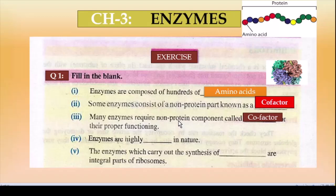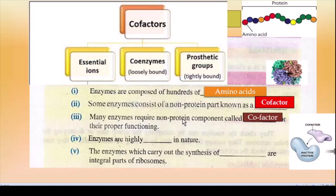Cofactor aur prosthetic group mein kaafi logon ko confusion hota hai. Ek enzyme ke saath jo non-protein part attach hota hai, that is a cofactor. Cofactor ke aage teen types hain: metal ions, coenzymes, aur prosthetic group. Prosthetic group tightly bound hota hai; loosely bound ho toh coenzyme. Agar loosely ya tightly bound mention nahi hai toh hum likhenge cofactor.